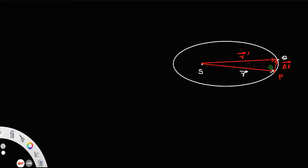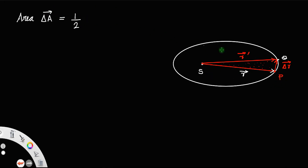For any triangle, considering the adjacent side vectors, we have area delta A equal to half the cross product of the adjacent sides. Taking the adjacent sides as SP and PQ, that is R cross delta R, that will be our area.